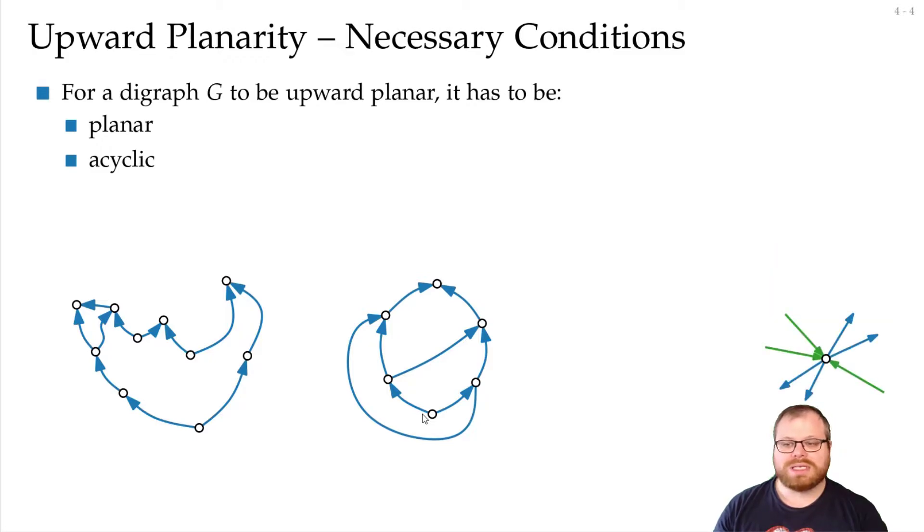There is a third necessary condition. Let's have a look at a single vertex and assume that we have some incoming edges and some outgoing edges like this. We can start with the green incoming edge. Then, if we follow the embedding, we have outgoing edges, so they go upwards. Then again we have green incoming edges, so following the embedding they have to be here. But now these two outgoing edges have to lie in between, so like this. But then they cannot be drawn upwards, so we have a contradiction.